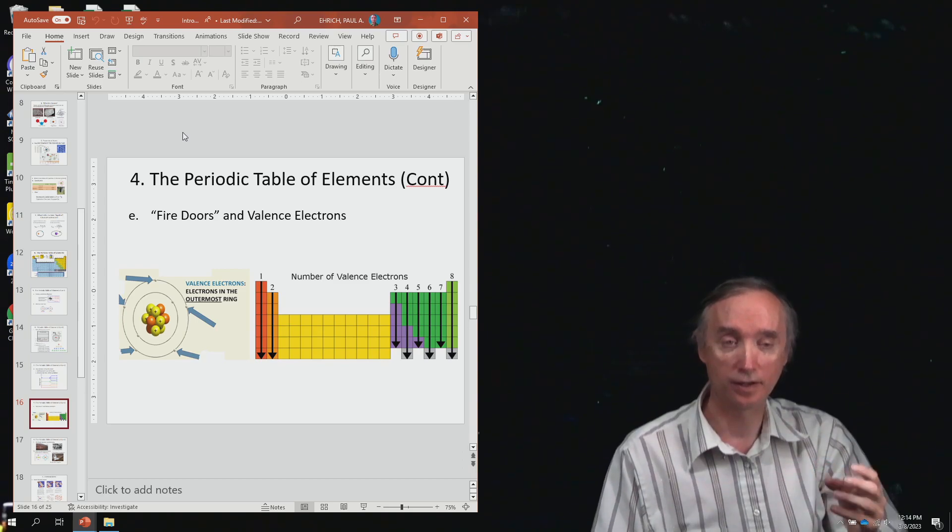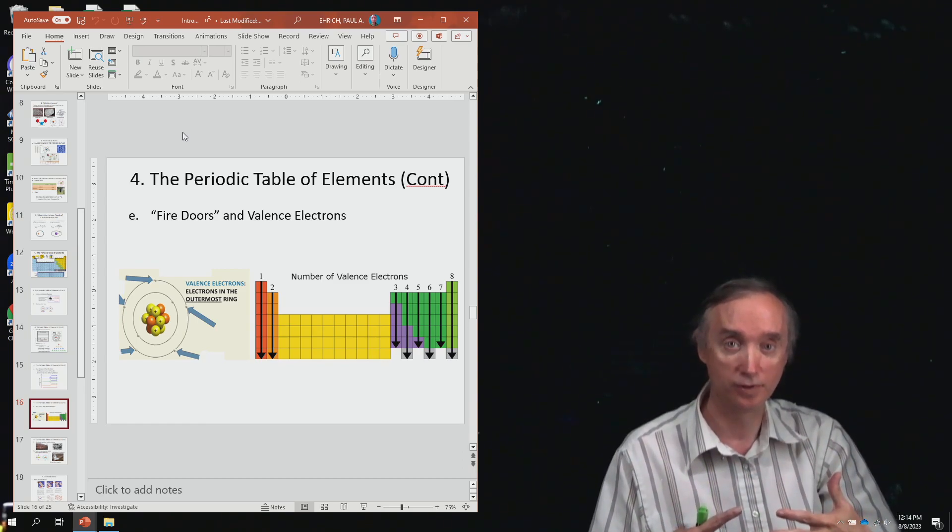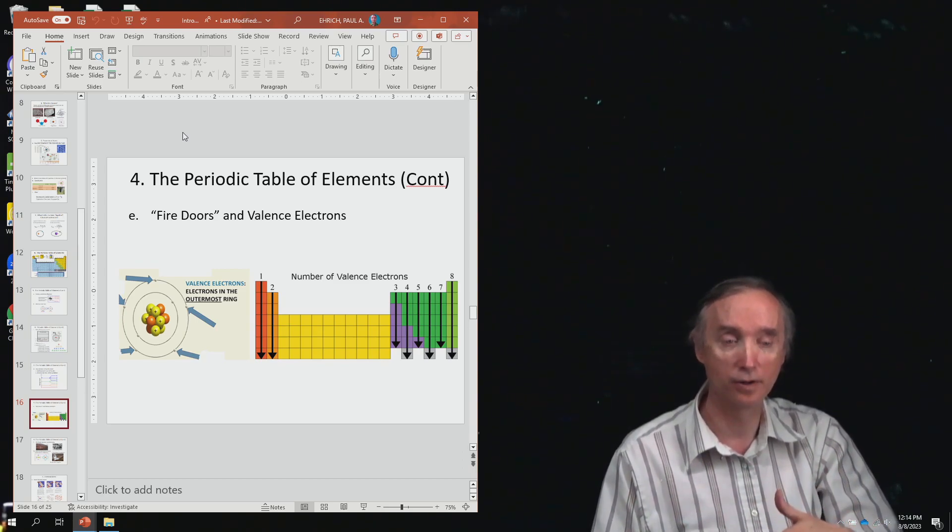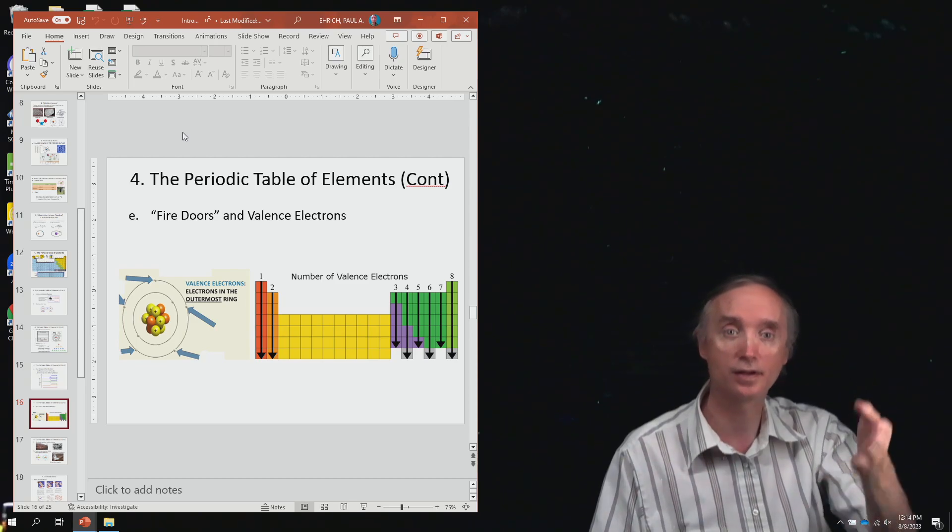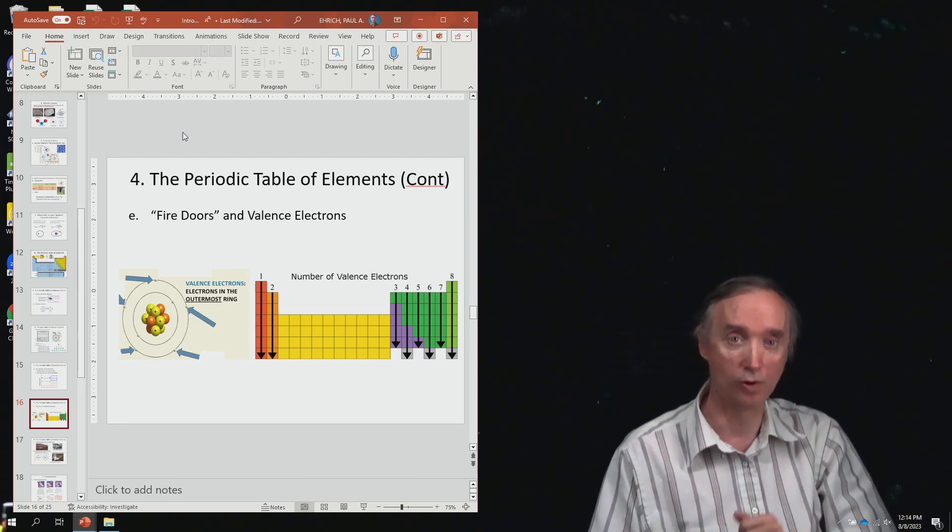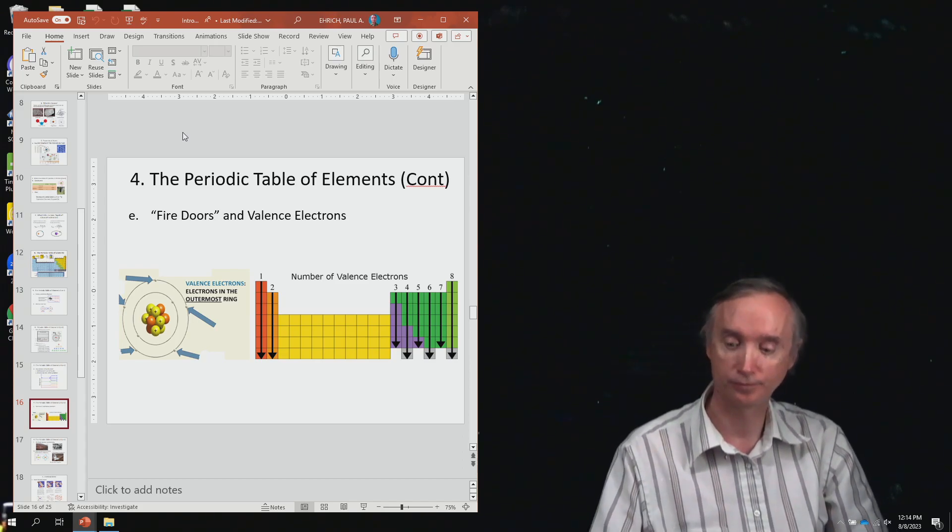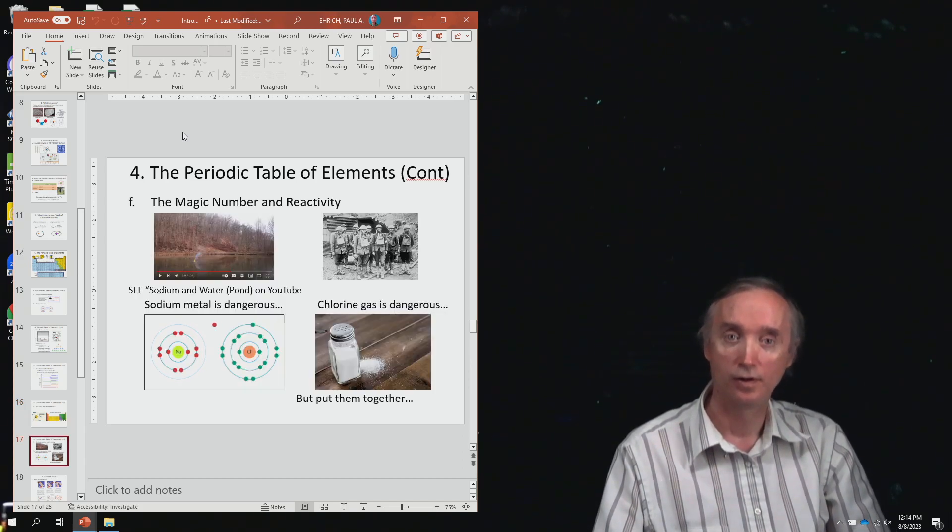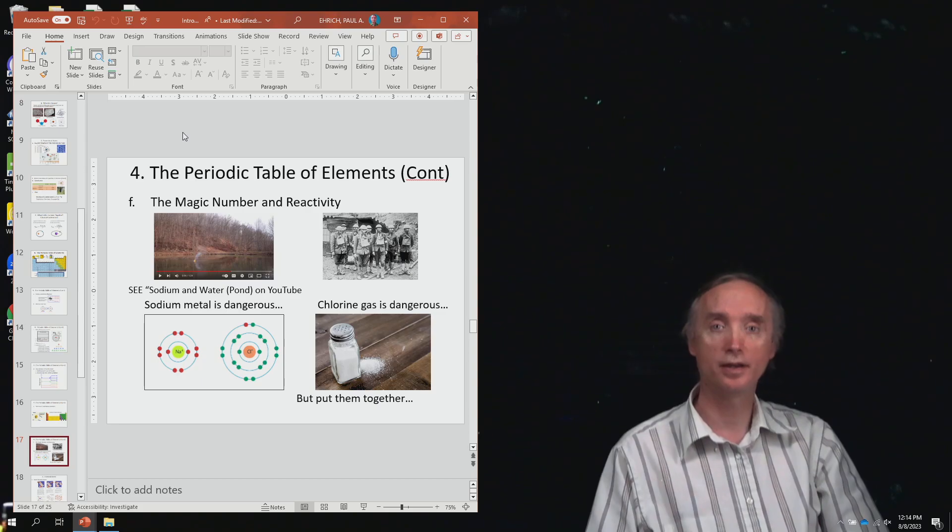That all, in a chemical reaction, they will beg, borrow, steal electrons, so that an element thinks it's in column number eight. It wants to get to this magic number of eight. So let's take a break and when we come back, let's talk about reactivity on the periodic table.